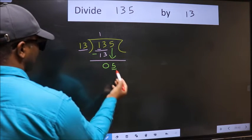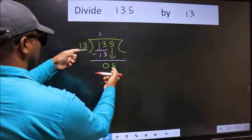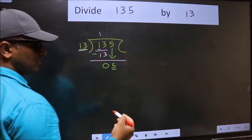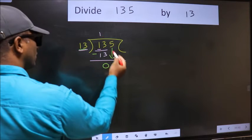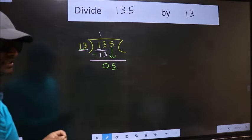Here we have 5 and here 13. 5 is smaller than 13. So what many do is, they directly put dot, take 0. Which is wrong.